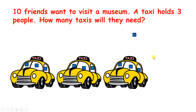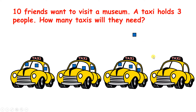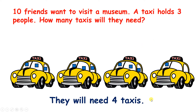So we need one more taxi, so that this person can get to the museum as well. So although ten divided by three is three remainder one, here we need to round up our remainder to four, so they will need four taxis.